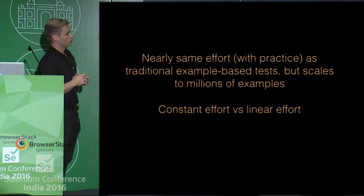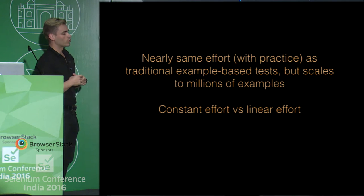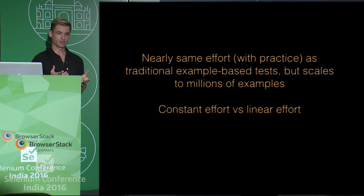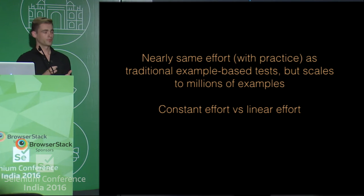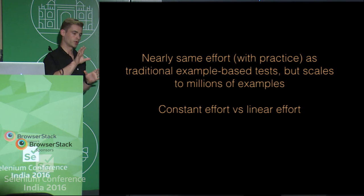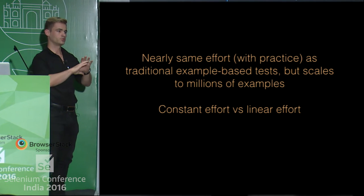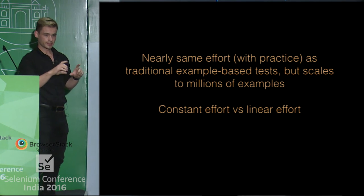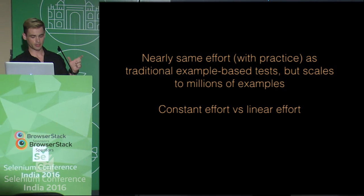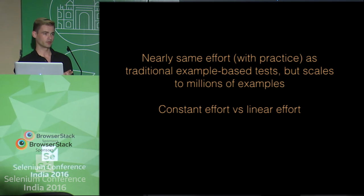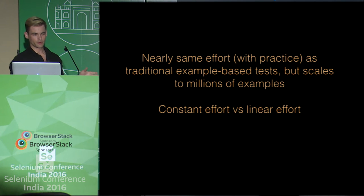If we can teach the computer to do this, and if we write properties about our tests — for example, that whenever the user is logged in they should always see a logout link — that one property can now expand and scale over millions and millions of tests. So we get constant effort no matter how many tests we run, versus the linear effort required if we want to run a million handwritten tests. This scale is much, much better for covering all the state space.